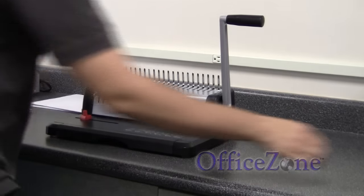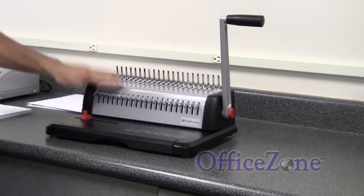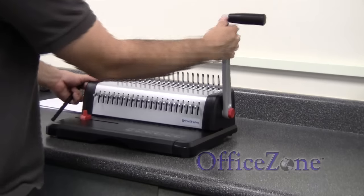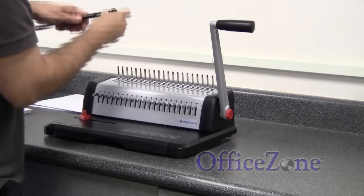Now what I'm going to do is I'm going to actually put the comb on the machine. Some machines have two handles, one for the punching, one for opening the combs. In this case, this machine actually pulls down to punch, pushes back to open the combs. So I'm going to put the comb on here.